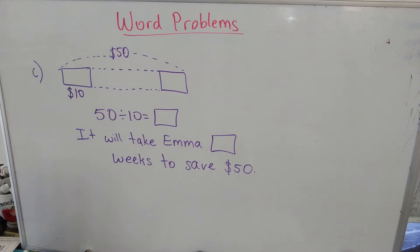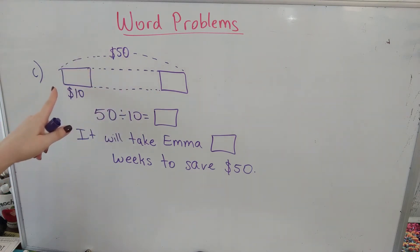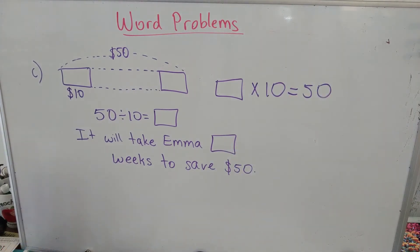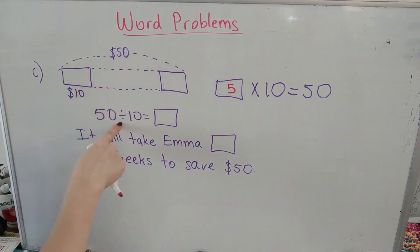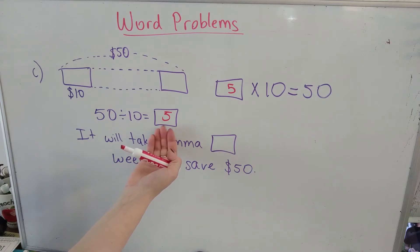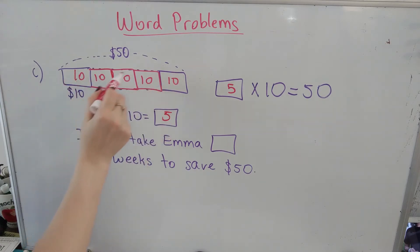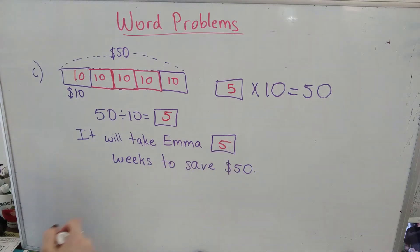Let me read letter C again. Emma saves $10 each week. How long will it take her to save $50 total? In this problem we know the total; we need to find the number of equal groups. We can say what number times 10 gives me 50 total — 5 times 10 is 50. Or 50 divided by 10 groups equals 5. So $10 for 5 weeks: week 1, week 2, week 3, week 4, week 5, with $10 each — 10, 20, 30, 40, 50. It will take Emma 5 weeks to save $50.